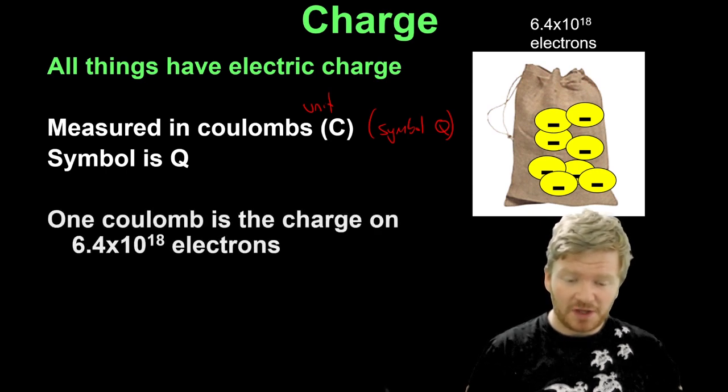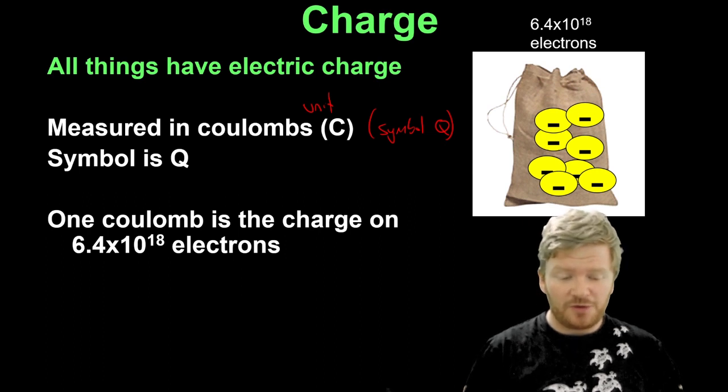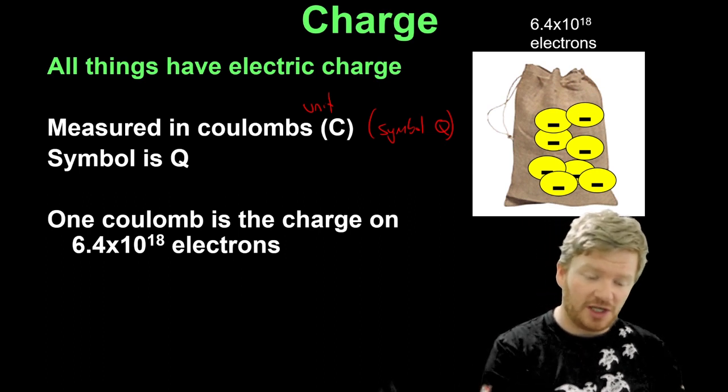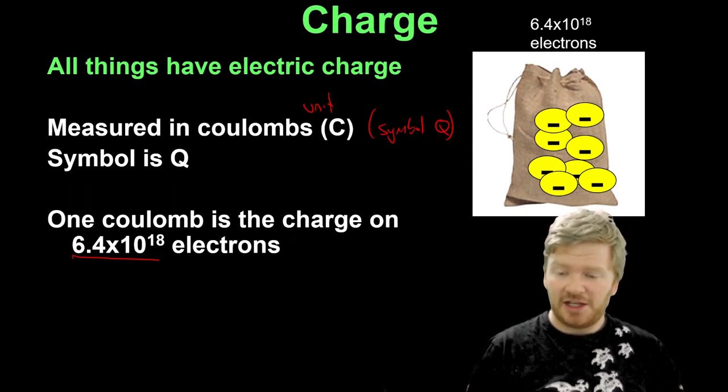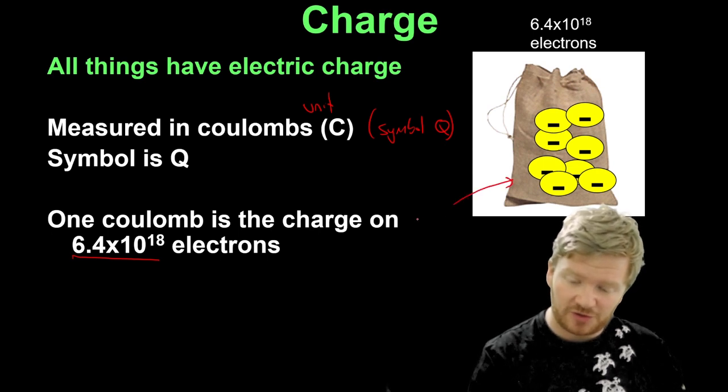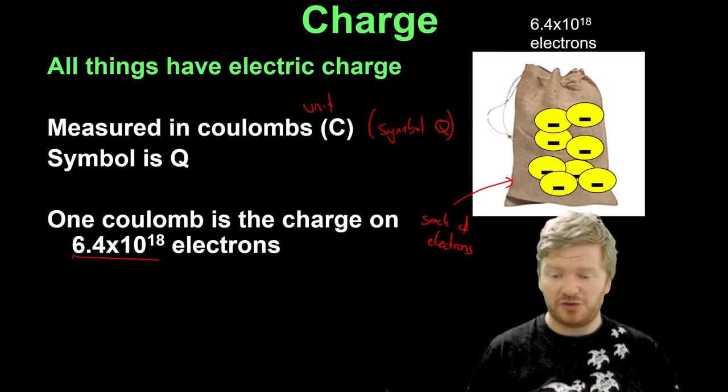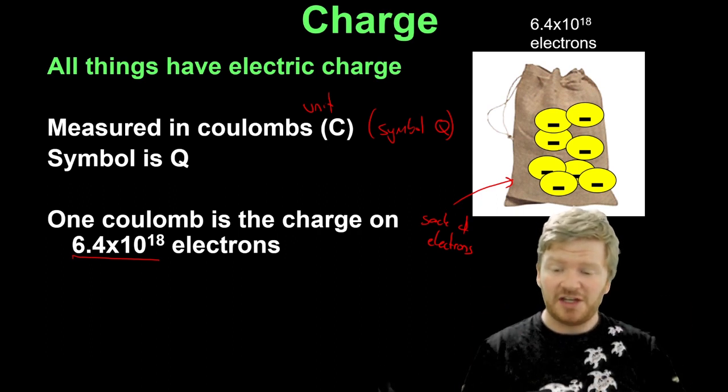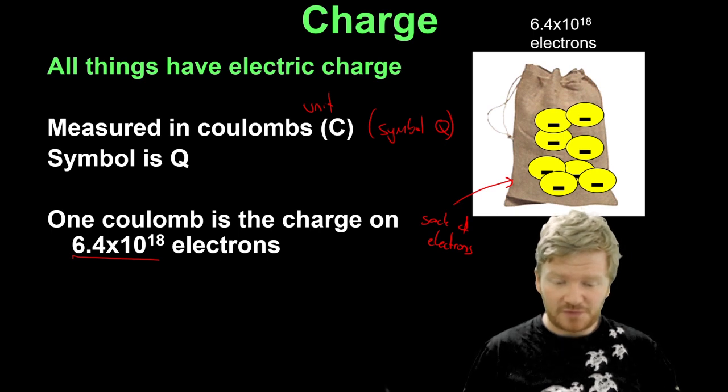So that symbol is Q. Now one Coulomb is equivalent to the charge that you get on 6.4 times 10 to the 18 electrons. So one useful way of thinking about a Coulomb is as a sack of electrons. You can imagine that a Coulomb is the same amount of charge that you'd get if you got a massive sack and shoved 6.4 times 10 to the 18 electrons into it.